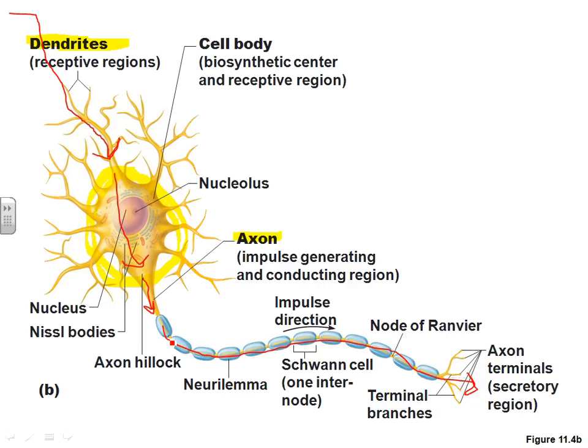In this particular picture, they're showing you that the axon of your neuron is surrounded by Schwann cells. So, is this a central nervous system neuron or a peripheral nervous system neuron? Peripheral nervous system — because if it were in the central nervous system, it would have oligodendrocytes instead of Schwann cells.